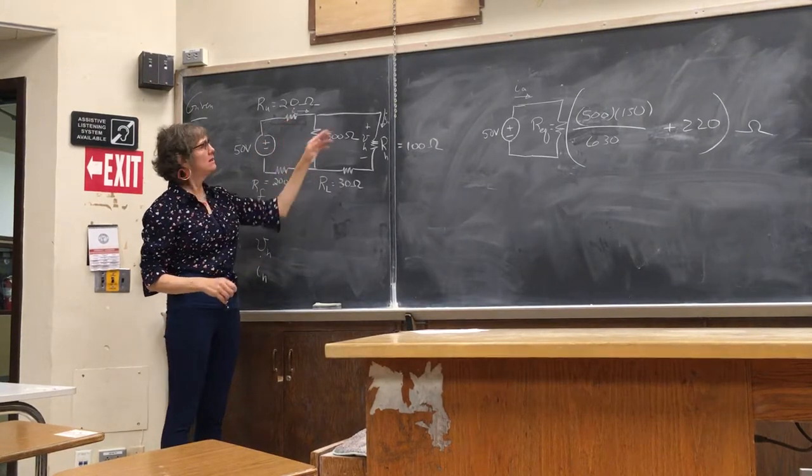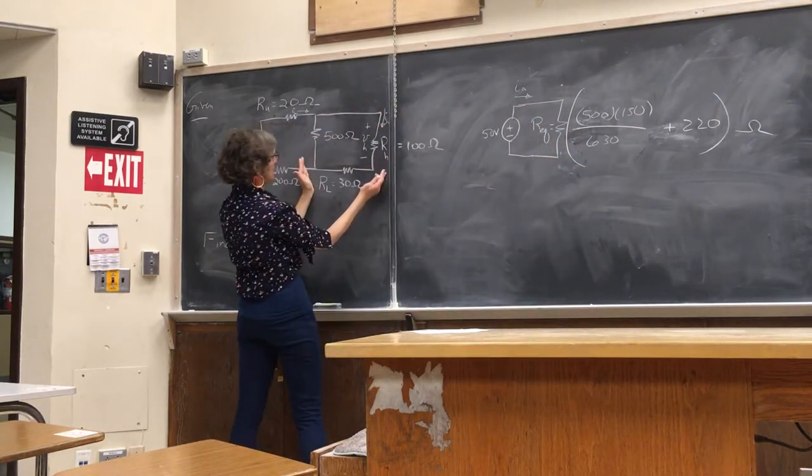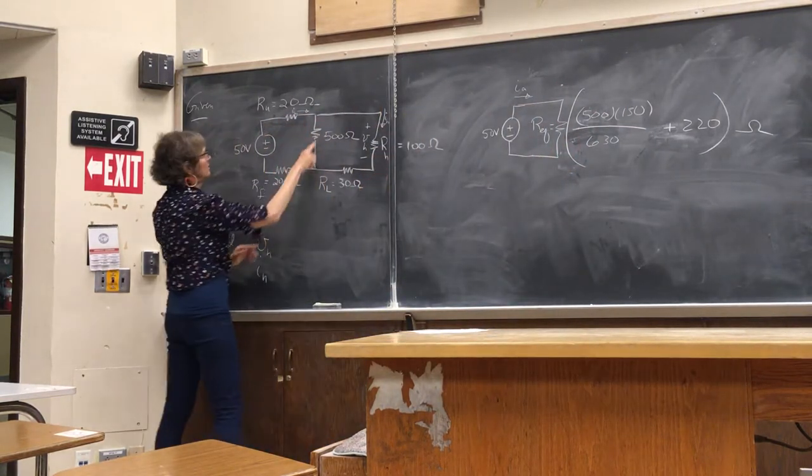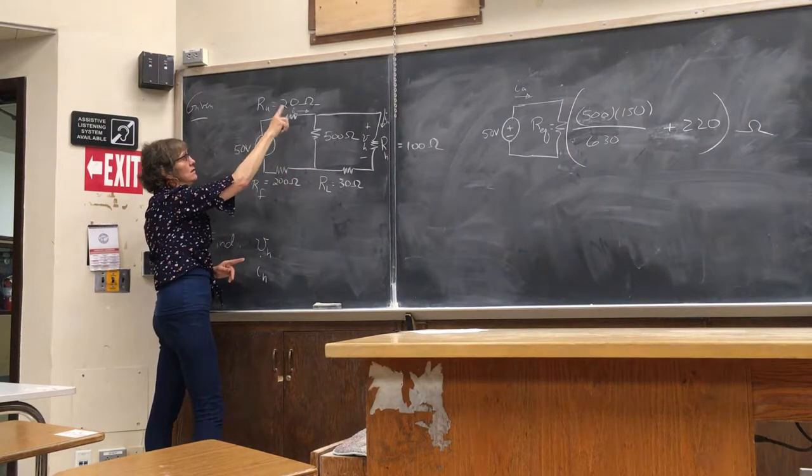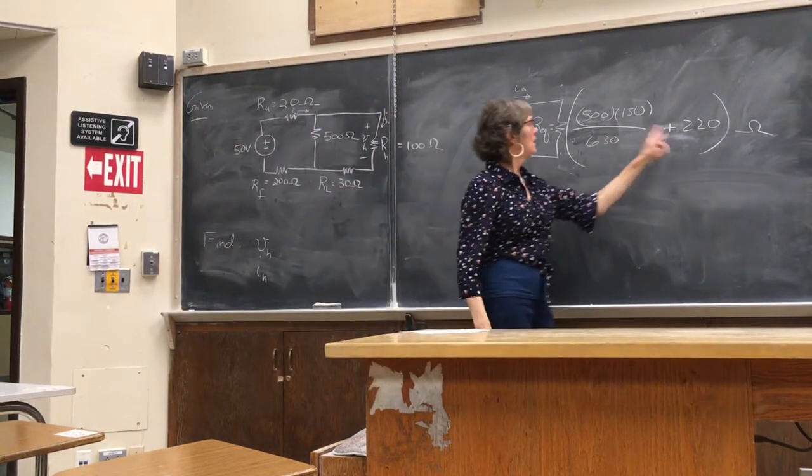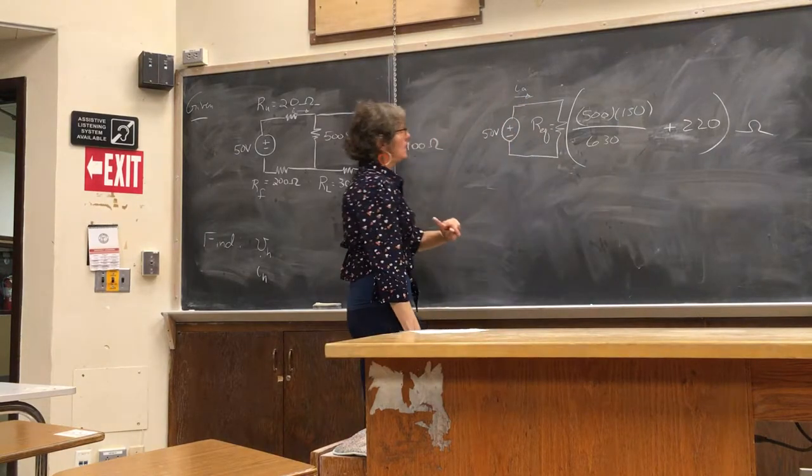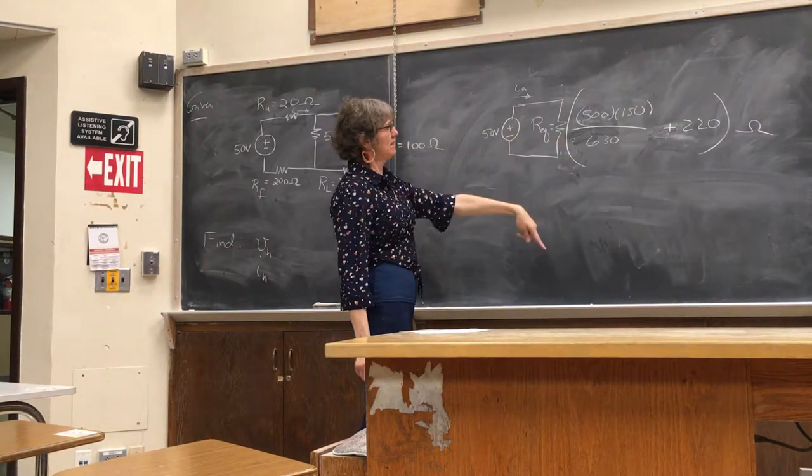And then I have this equivalent resistor here, and then I see that the rest is all in series, so I just added 220 to it. So, whatever that number is, that's the equivalent resistance.